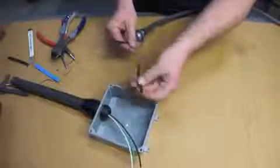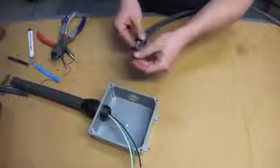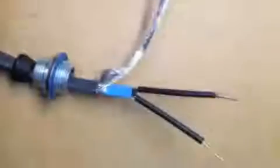Slide each eighth inch shrink tube over each bus wire. Shrink with a heat gun or torch until tubing is completely shrunk.